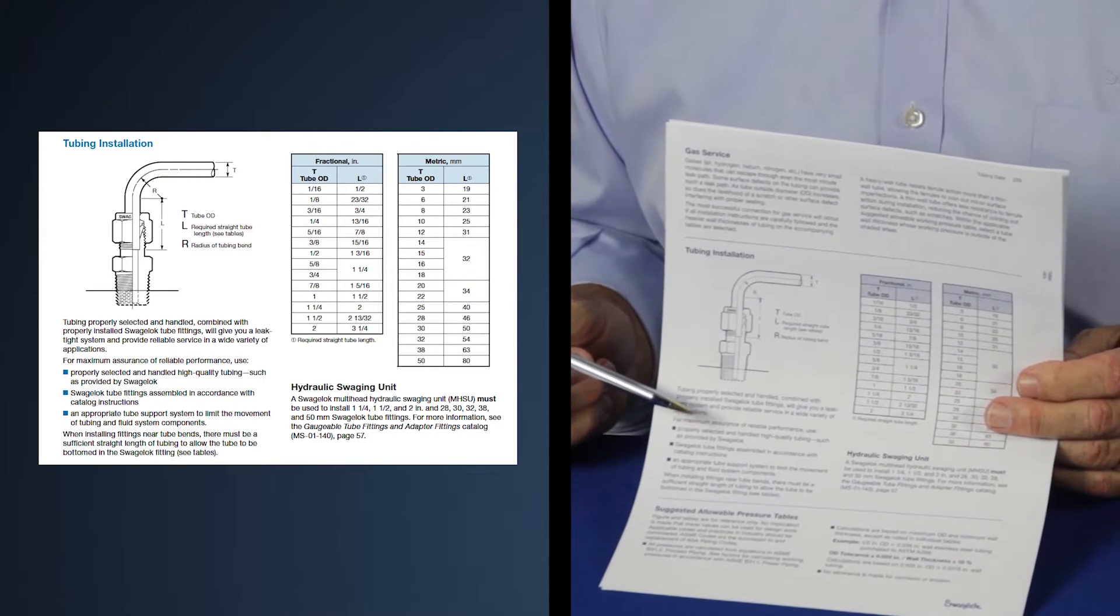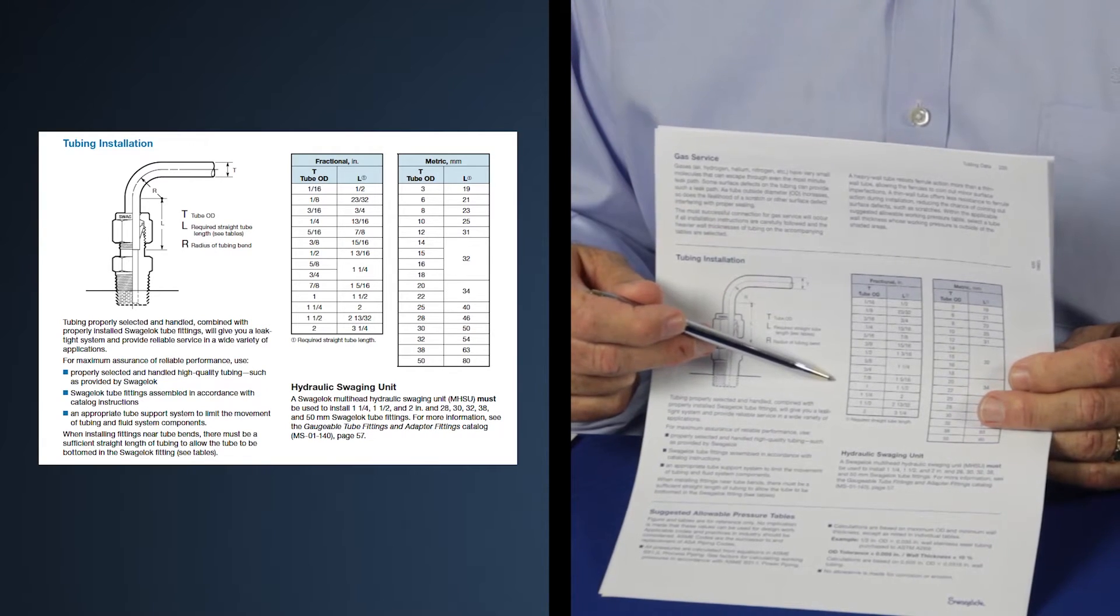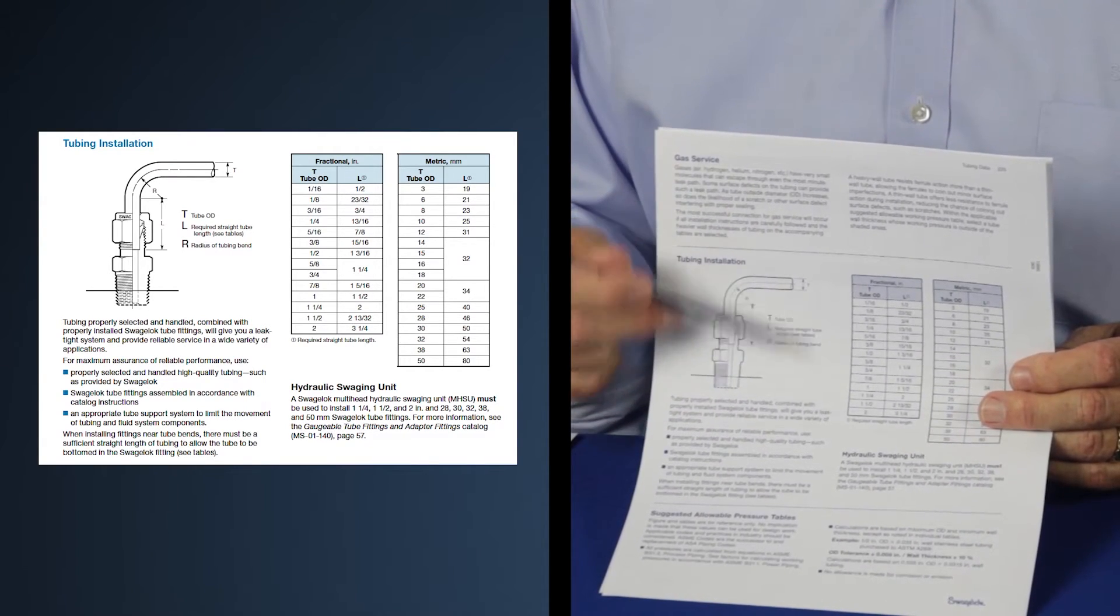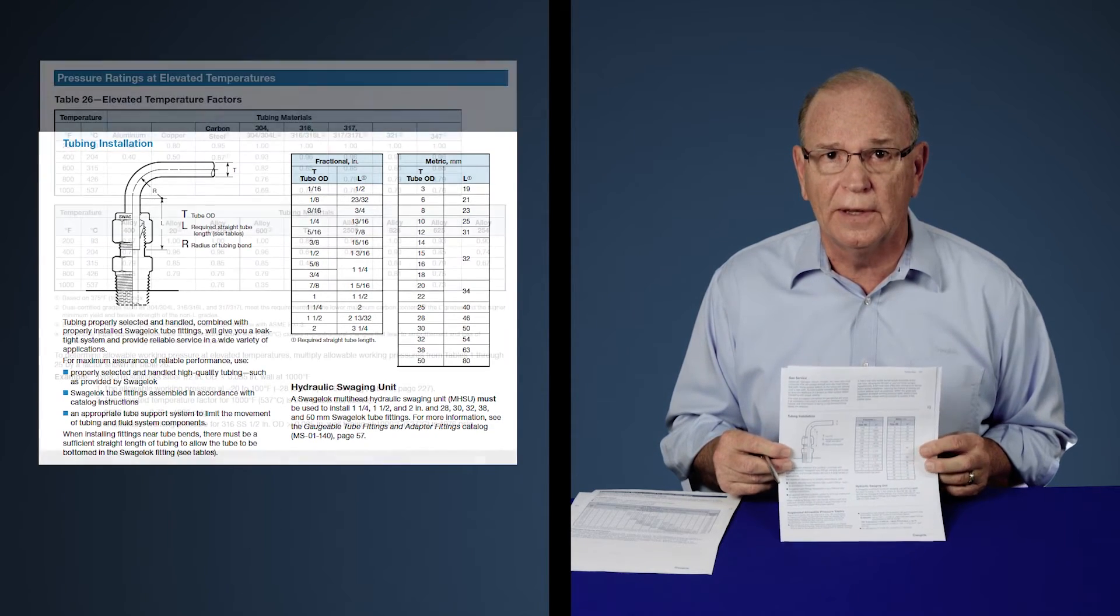Using our half-inch tubing example, you'll see that half-inch tubing requires a straight length of one and three-sixteenths of an inch in order to properly bottom the tubing out in the fitting.